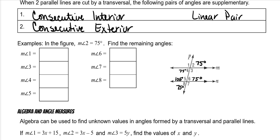Corresponding angles are congruent, so you would skip and go to angle one — so this would be 105. And same thing with the other side. Vertical angles are congruent, so this is 105. And this is 105, because these are vertical also.